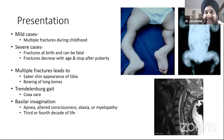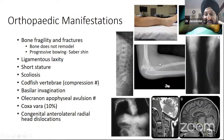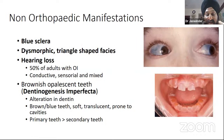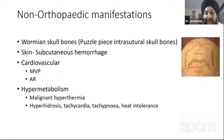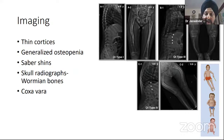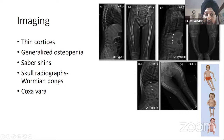In clinical examination we look for deformities, painful fractures, Trendelenburg gait, myelopathy signs, and non-orthopedic manifestations like blue sclera, hearing loss, and dental abnormalities. On X-ray, findings include thin cortices, generalized osteopenia, saber shins, Wormian skull bones, and coxa vara. In type 1 and type 4 disease there may be an early femur shaft fracture with some bowing, while type 2 and type 3 present with severe deformities, and type 2 may be fatal.